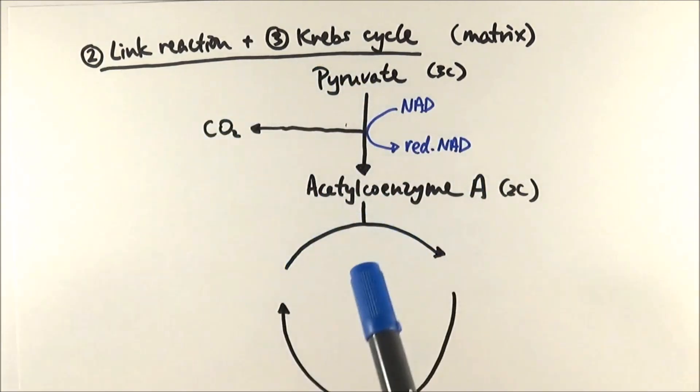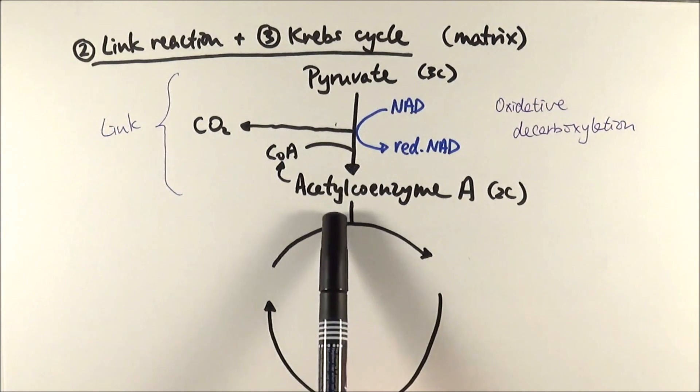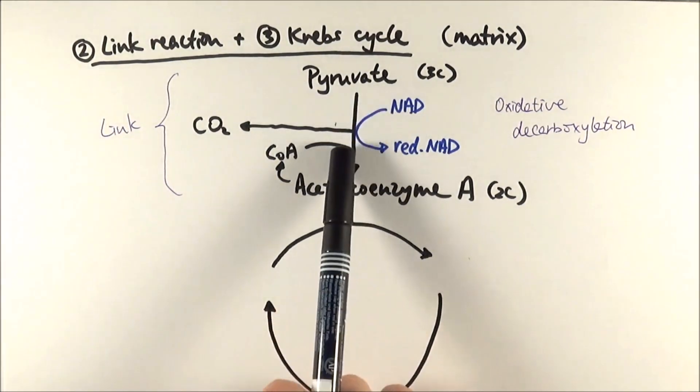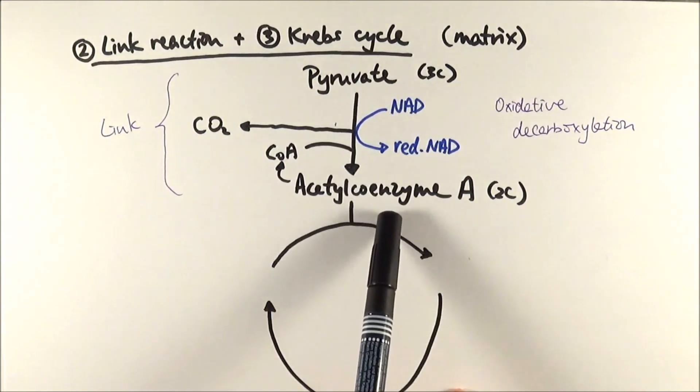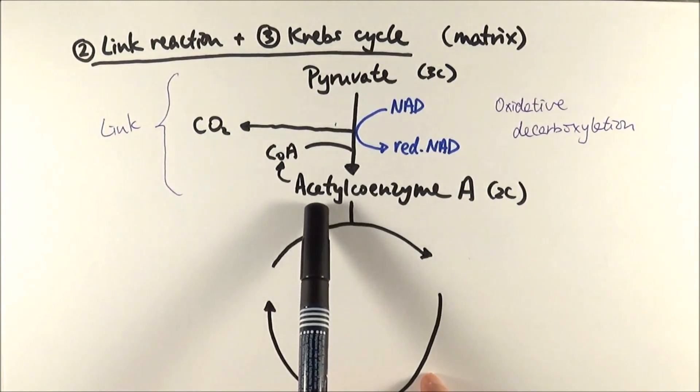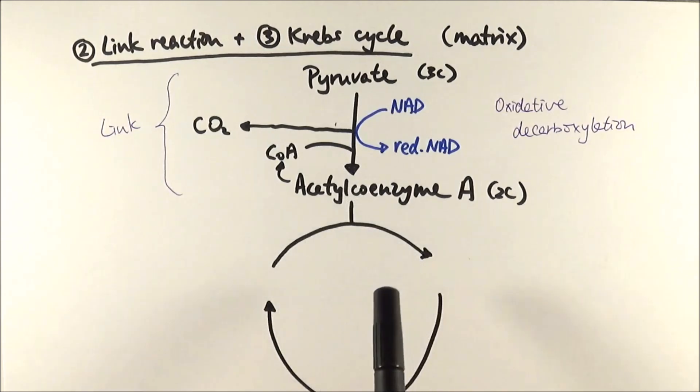This link reaction is also what we call an oxidative decarboxylation reaction. The acetyl group was formed from pyruvate and it joins with coenzyme A to make acetyl coenzyme A. The reason for that is just that we can stabilize it temporarily before going into the next cycle, which is the Krebs cycle.